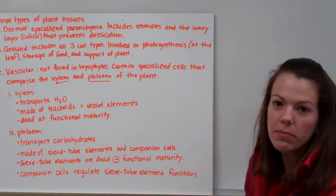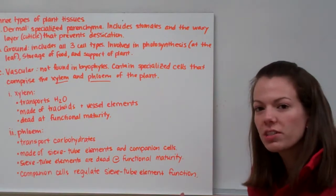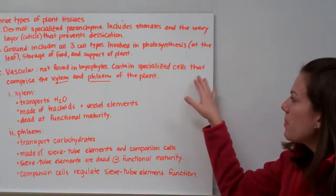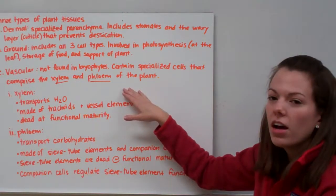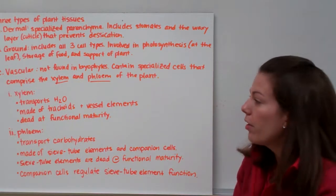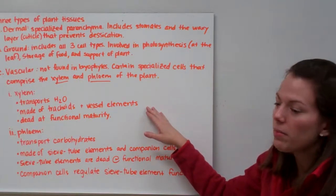Our vascular tissues are not found in bryophytes, so they're not found in plants like moss. And they are basically the transport tubes of a plant. They contain specialized cells that comprise the xylem and the phloem of the plant. And those two words should be familiar for you. The xylem transports water, and it's made of things called tracheids and vessel elements.